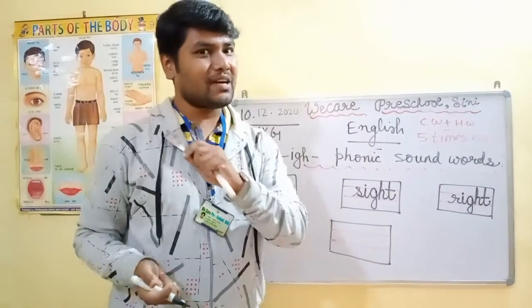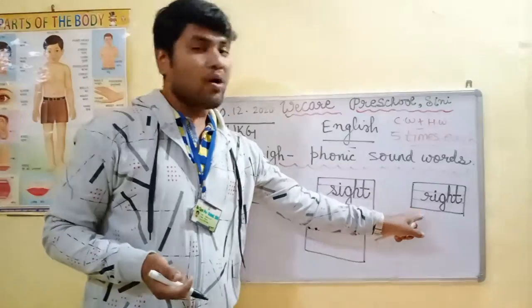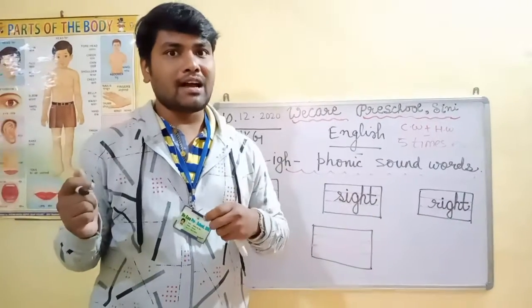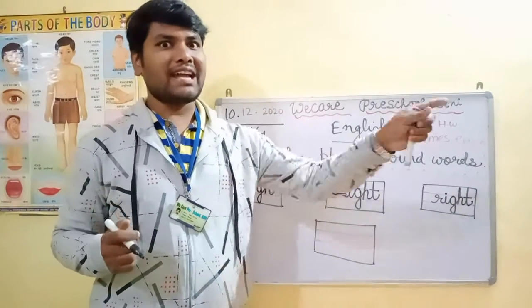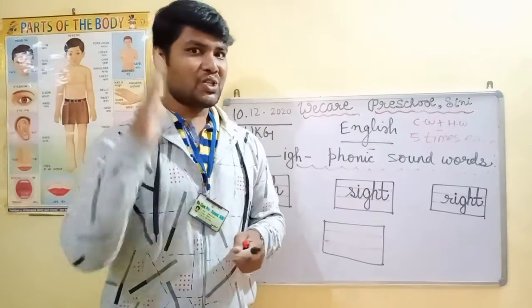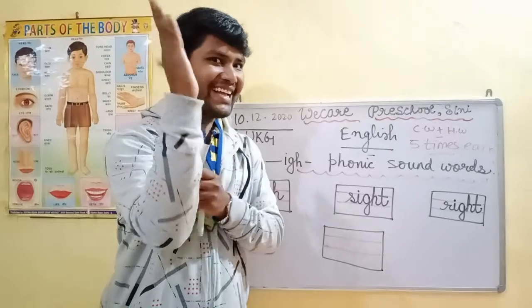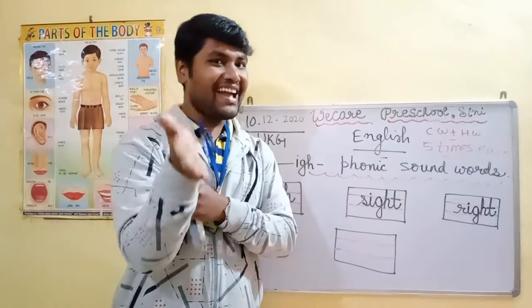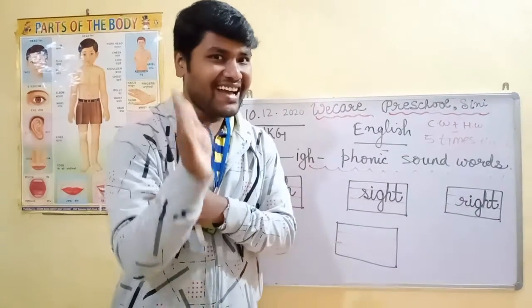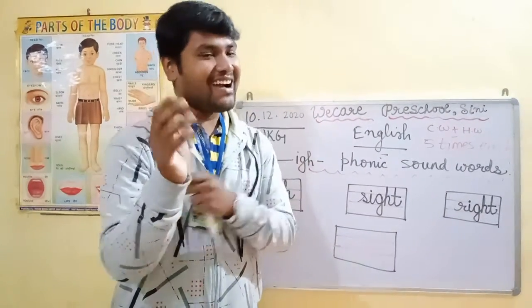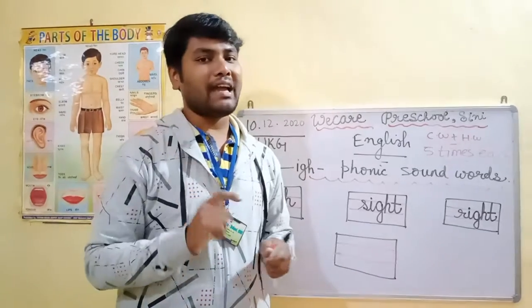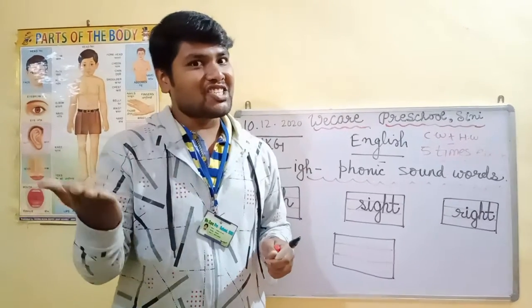Right ka aur ek matlab hota hai — disha dikhana. Go to the right side. Show me your right hand — apna right hand dikhaao. Daya haath. Right ka matlab Daya hota hai — right direction.